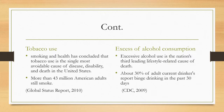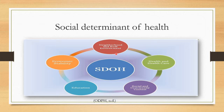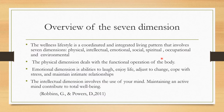Let us now look at the social determinants of health. Those determinants include economic stability, education, social and community context, health and health care, and neighborhood and built environment — all things that affect health. For instance, a person's level of education affects their knowledge about good diet, the importance of physical exercise, and tobacco use, and so it has an impact on health.